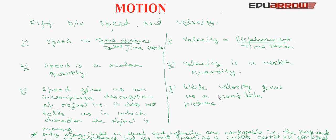The important thing to note here is that only the magnitude of speed and velocity are comparable. The magnitude can be compared, but the two quantities as a whole cannot be compared, because one is a scalar and the other is a vector quantity. We should remember that scalar and vector quantities as a whole cannot be compared.